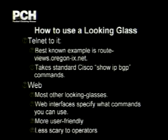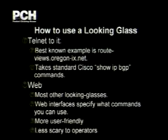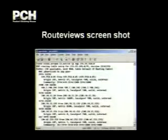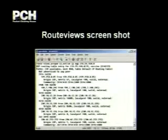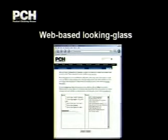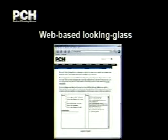Most of the looking glasses out there are web pages now — CGI programs. That specifies what commands you can use, and this is a lot more user-friendly if you aren't really up on your show IP BGP syntax. Network operators tend to find it less scary because they can limit what commands people are going to be running. This is a screenshot of the RouteViews looking glass — that's a standard Cisco router where you can give it routing queries. And this is the PCH looking glass — a web page where you tell it what query you want to do, give it arguments, tell it what router to query, and it does it for you.